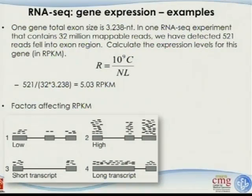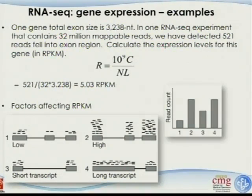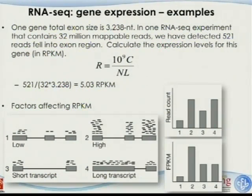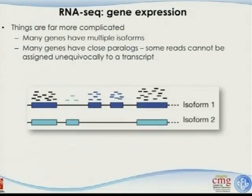There are a couple of factors affecting RPKM. Some genes are longer than others, and some have higher expression. If you only look at the read count, samples 1 through 4 show their raw numbers. But once you calculate the RPKM, you can see that the fourth sample, even though its total count is high, has a lower expression level estimate for that gene, because its isoform is longer than the others. Very straightforward.